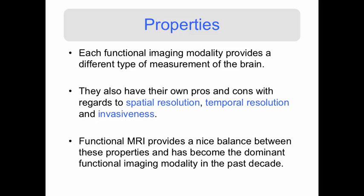MEG and EEG have higher temporal resolution than fMRI, but they do not provide as much spatial resolution. In contrast, fMRI is much faster than PET and also provides better spatial resolution. PET injects radioactive tracers into the subject in order to measure brain activation, so it's somewhat invasive.